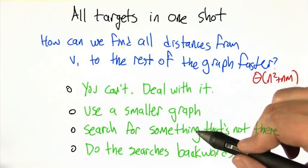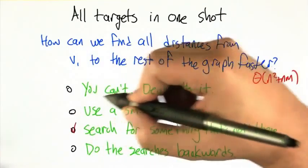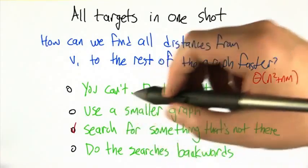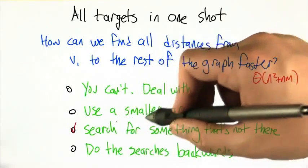And the reason that this actually works is if you search using the algorithm that we've been looking at, if you search from v1 for something that's not in the graph at all, what it's going to do...